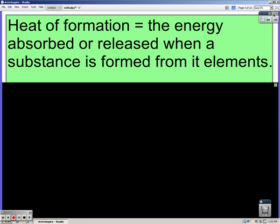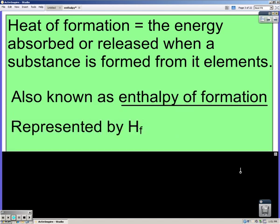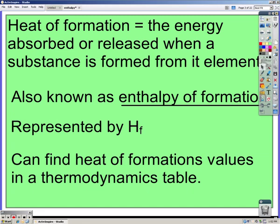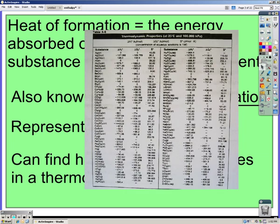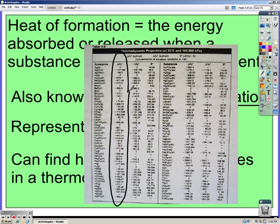The heat of formation is the energy absorbed or released when a substance is formed from its elements. It's also referred to as the enthalpy of formation and represented by Hf (H for enthalpy, F for formation). We can find these values on a table located in the back of your notes. You'd find the compound you want and then look at the Delta H column.